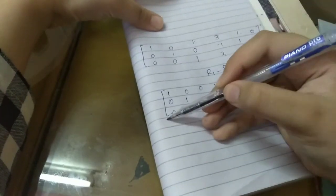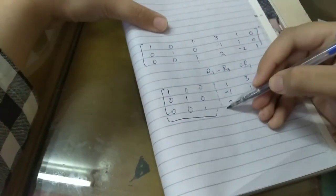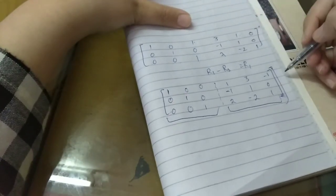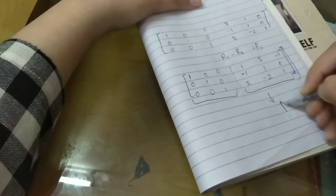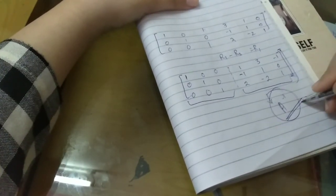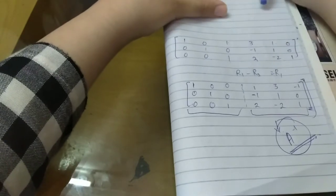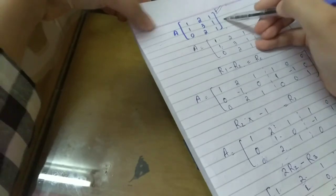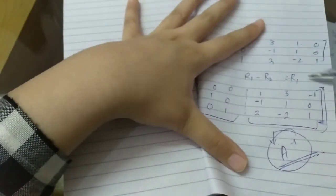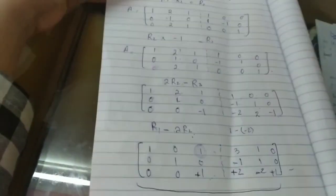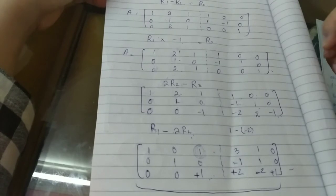So now we have the identity matrix on the left side, and on the right side we have a new matrix. We call this new matrix the inverse of A. So what we started with as the identity matrix on the right side has now transformed into A inverse. This matrix is the result, and if you practice this you will understand better.